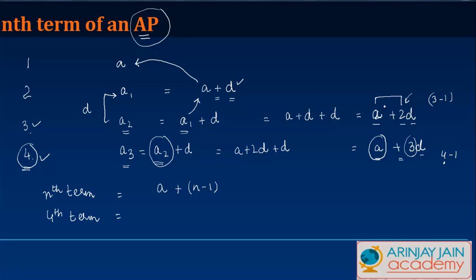For third, it was 2D. For two, it was 1D times D. Let's say in case of fourth term, we have written this as A plus 4 minus 1D, which is nothing but A plus 3D. Something that we saw over here.